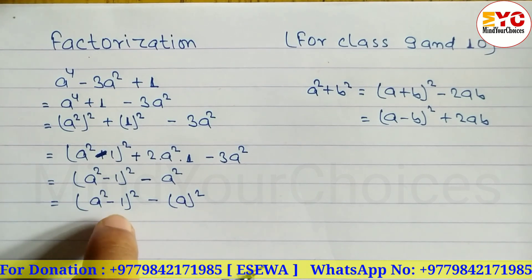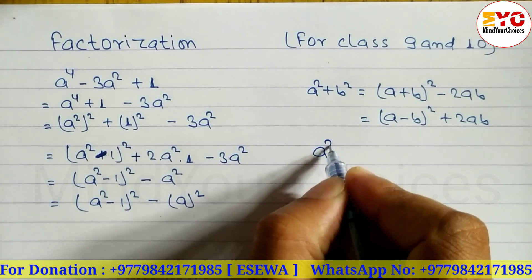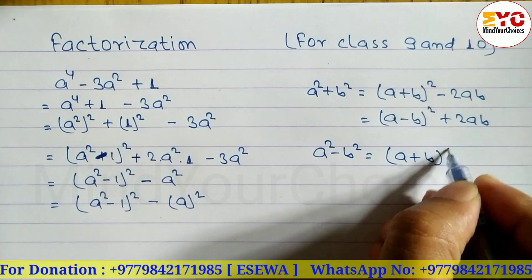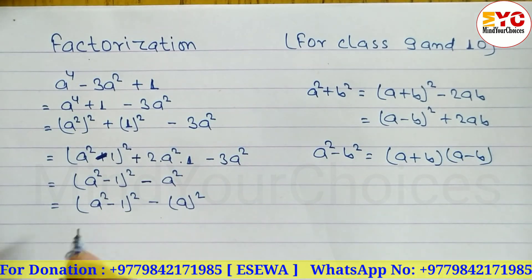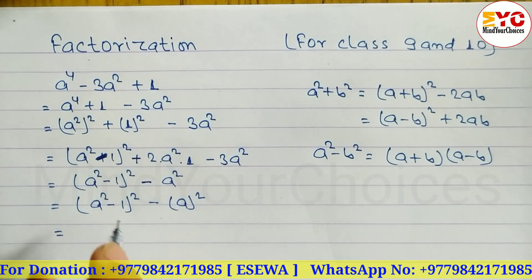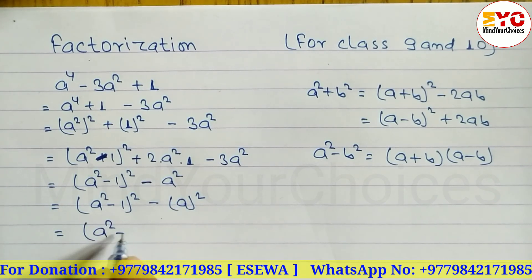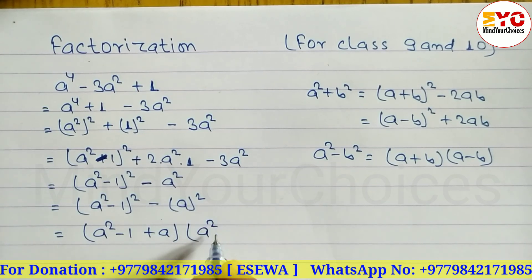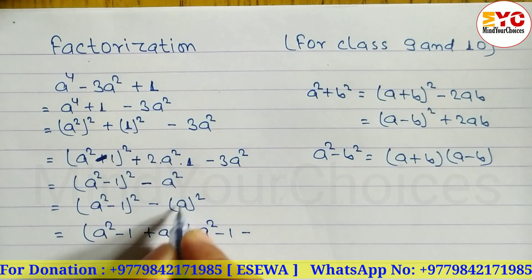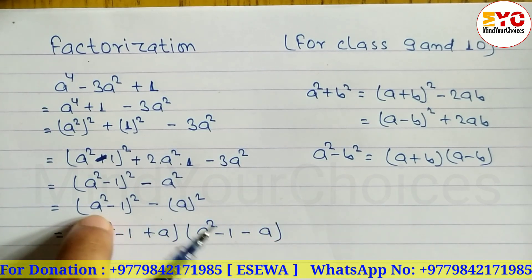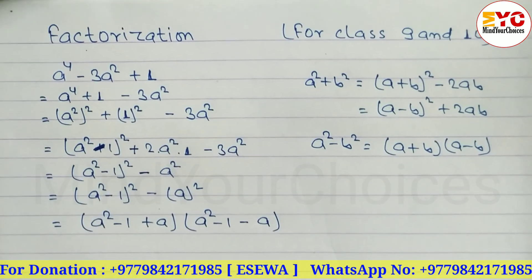This is once again in the form of a² minus b². The formula for a² minus b² is (a + b)(a minus b). In the place of a we have (a² minus 1), and in the place of b we have a. So we write: (a² minus 1 plus a) times (a² minus 1 minus a).